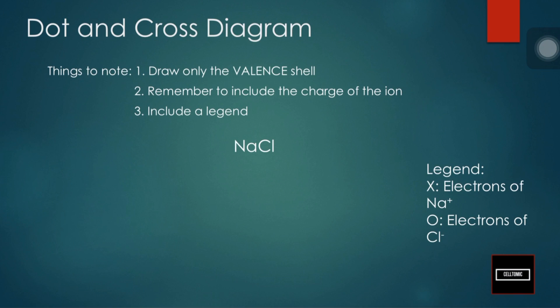Next, we need to include the charge of the ion — label it as +1, +2, −1, or −2. Lastly, include a legend to show what the cross and the dot represent. In this example, we'll be drawing the NaCl compound, sodium chloride. We'll use the cross to represent electrons of sodium and the dot to represent electrons of chlorine.